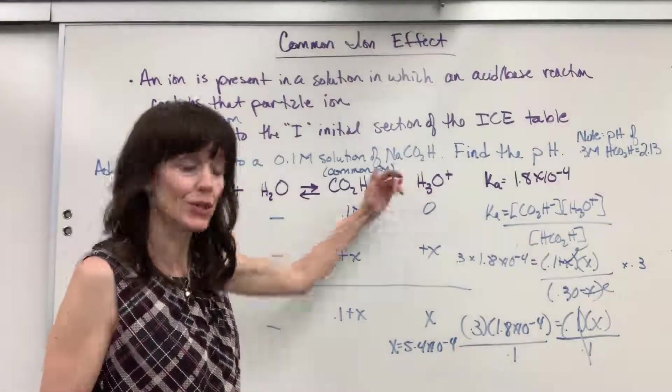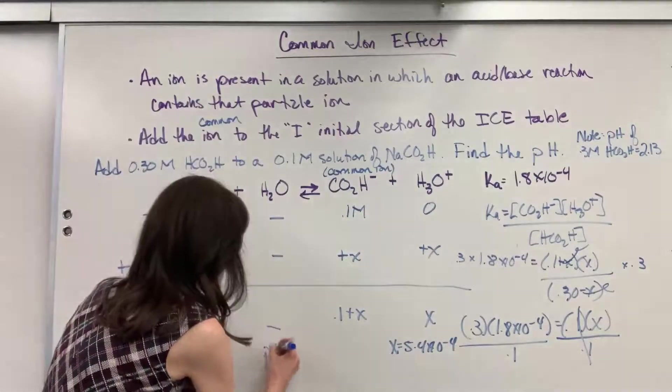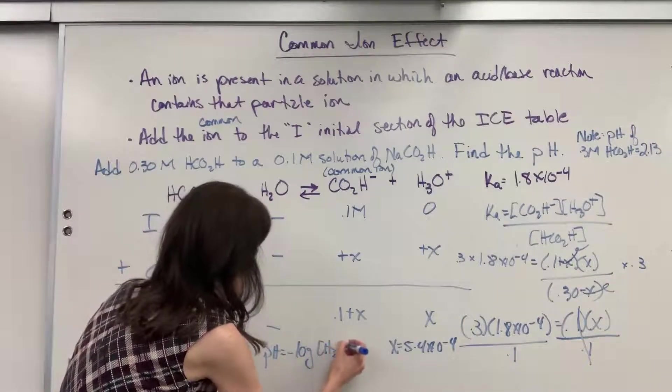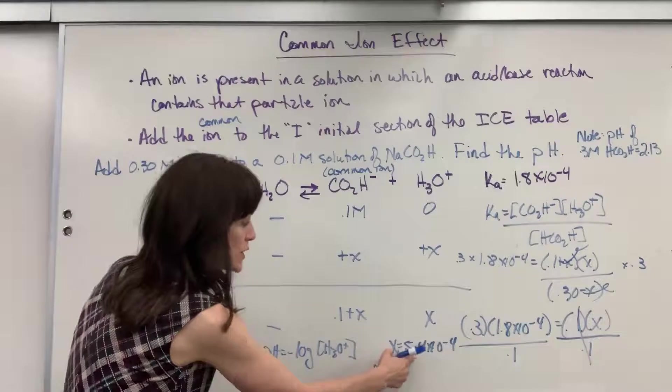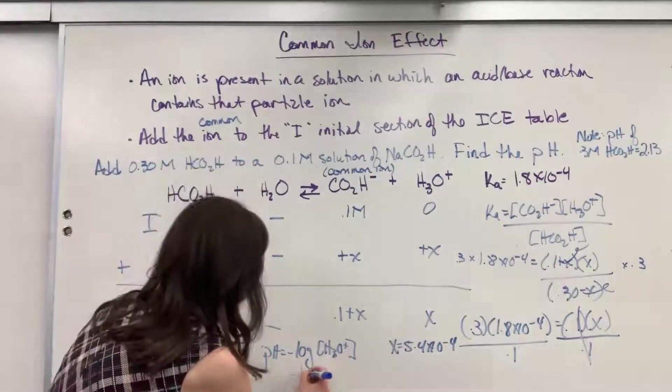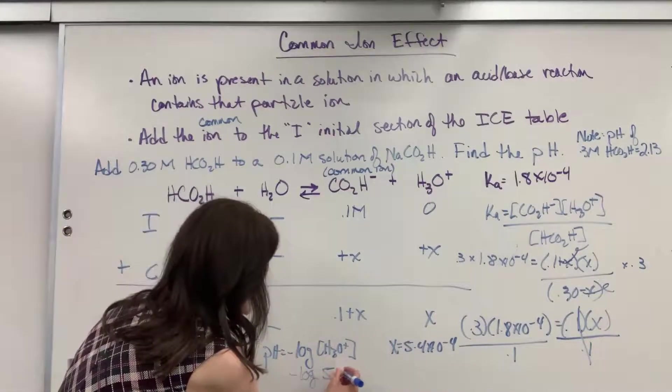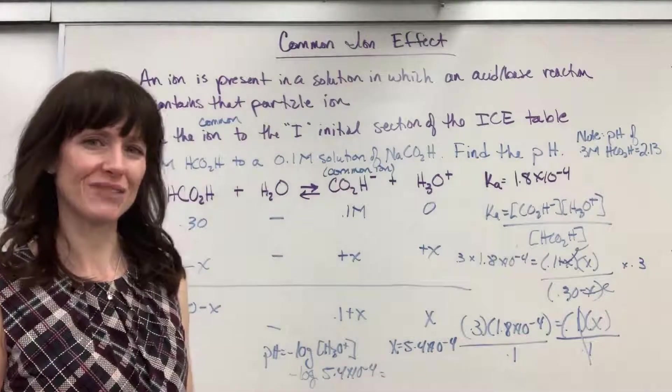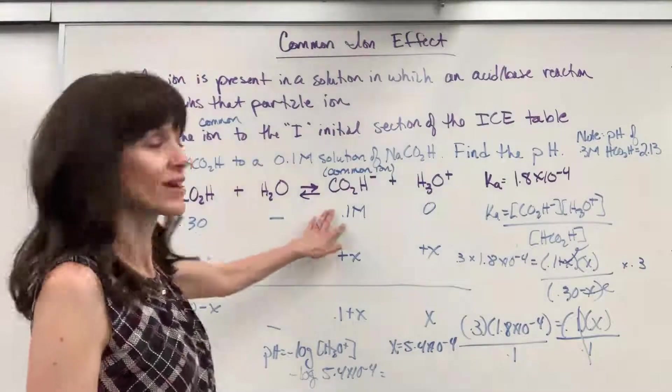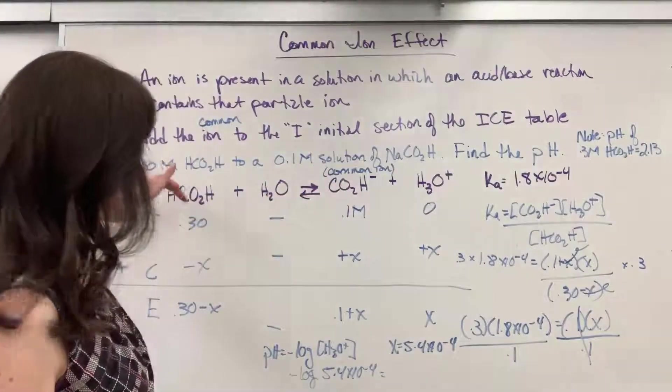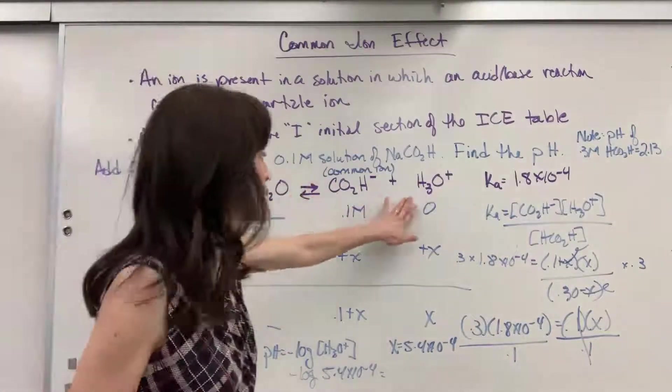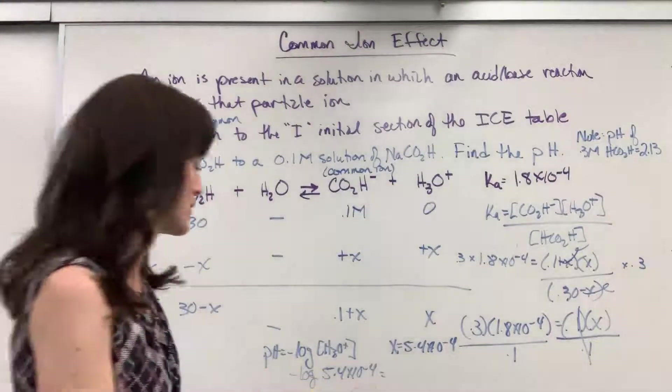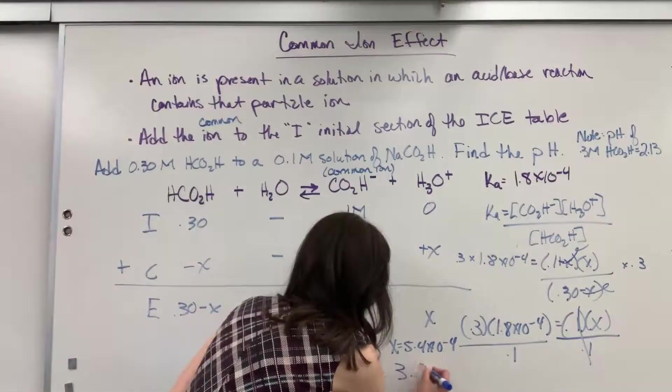Well, X is hydronium, so we can just take pH equals the negative log of the concentration of hydronium. Let's go ahead and do the negative log of this. Negative log of 5.4 times 10 to the minus 4. And remember our prediction. I said because we have a common ion, this is going to shift in the reverse direction. We're going to have less of the hydronium, more of that formic acid. Here's the pH, 3.27.